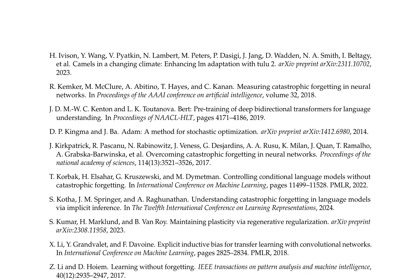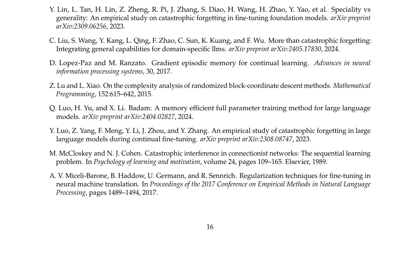The paper discusses techniques to mitigate catastrophic forgetting in LLMs, including using combinations of pre-training and fine-tuning, applying different learning rates for different layers, and utilizing knowledge distillation. The authors also explore the use of gradient episodic memory for continual learning and the importance of maintaining plasticity via regenerative regularization. They emphasize the trade-off between generality and speciality in fine-tuning foundation models and provide an extensive review of existing literature on catastrophic forgetting, underscoring the need for further research.